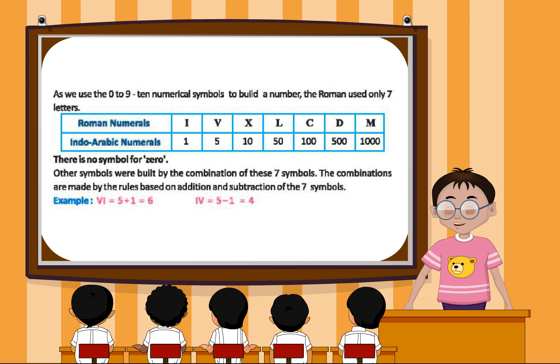There is no symbol for zero. Other symbols were built by the combination of these 7 symbols. The combinations are made by rules based on addition and subtraction of the 7 symbols.